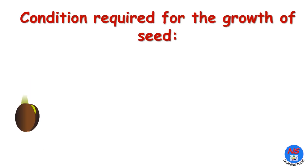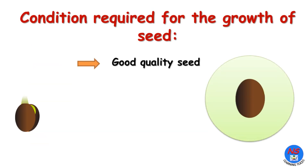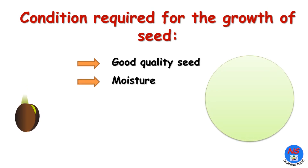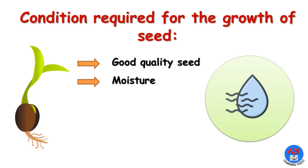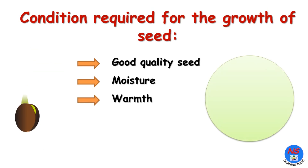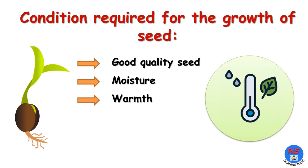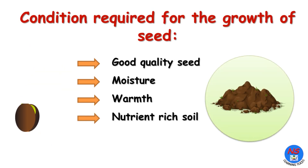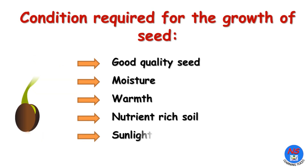Conditions required for growth of a seed: good quality seed, moisture, warmth, nutrient-rich soil, and sunlight.